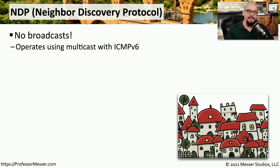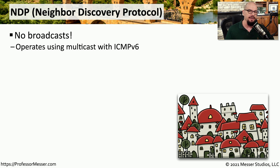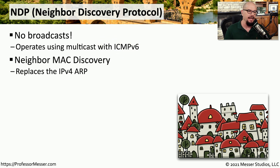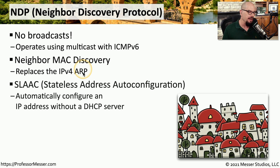That ARP process is what we use in IPv4 to identify a MAC address. But IPv6 does not use broadcasts, so there is a different process for IPv6 to identify MAC addresses of devices on your local network. In IPv6, we use NDP — Neighbor Discovery Protocol — using multicast specifically with ICMPv6. This replaces the ARP function seen in IPv4 with Neighbor MAC Discovery.